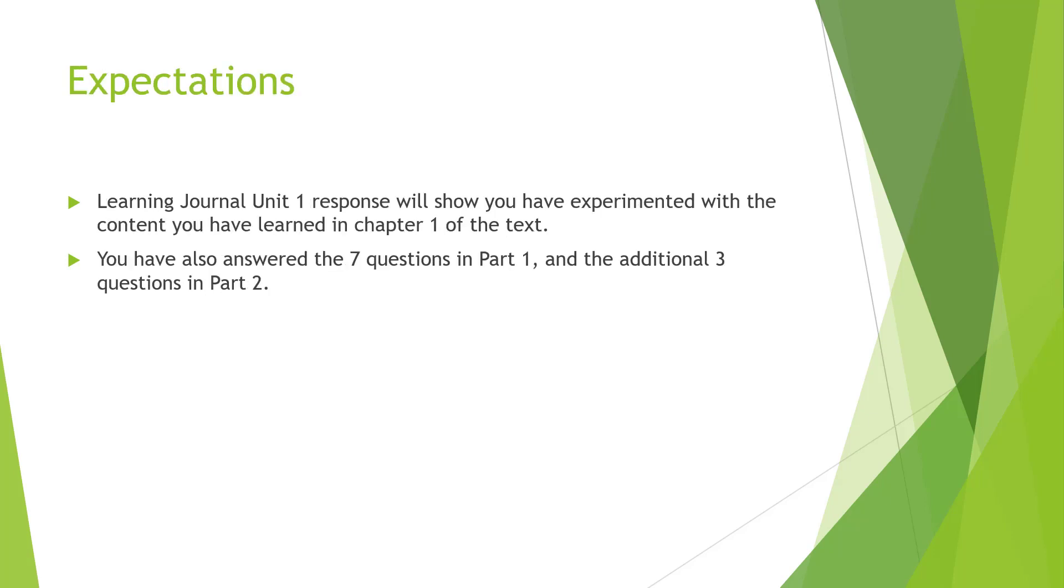So expectations from the learning journal unit 1. You will respond with the experiments that you've tried throughout chapter 1. You'll also answer the seven questions from part 1. That is the first question. The second question has four parts, so that's five questions total. Plus the third and fourth question make seven.